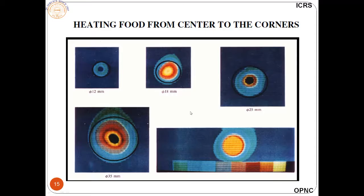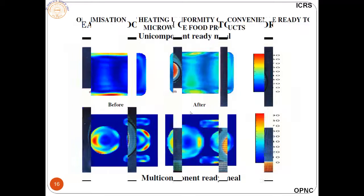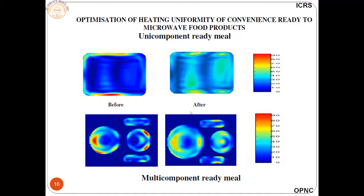A pictorial view shows a multi-component ready meal before and after microwave heating, and a single-component ready meal before and after, demonstrating uniform heating from center to corners, which is unique to microwaves.